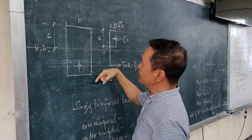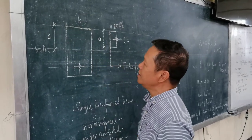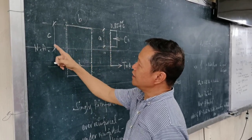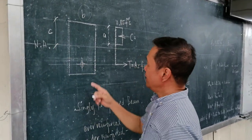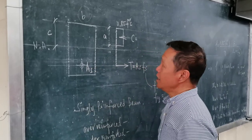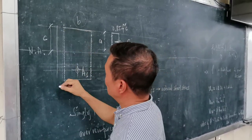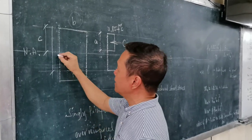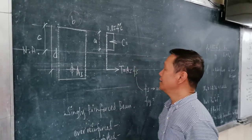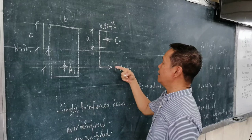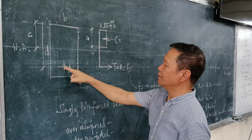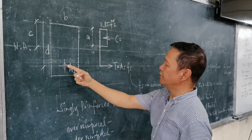For this rectangular section, this is the base, small letter b. And if this is the neutral axis, from the extreme fiber under compression to the neutral axis, it is denoted as small letter c. And this is the area of steel, A sub S. And from the extreme fiber under compression to the centroid of the steel reinforcement, it is denoted as the effective depth, small letter d. So in the stress diagram, you can see that the tensile force T line of action passes through the centroid of the area of steel.